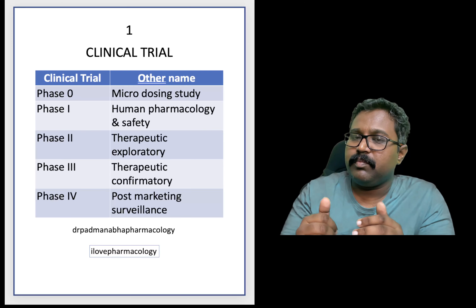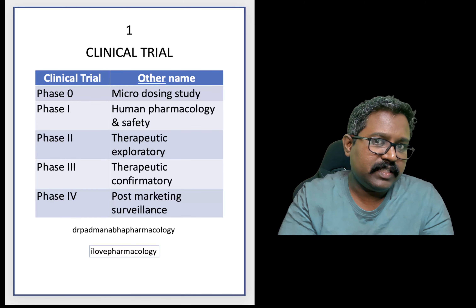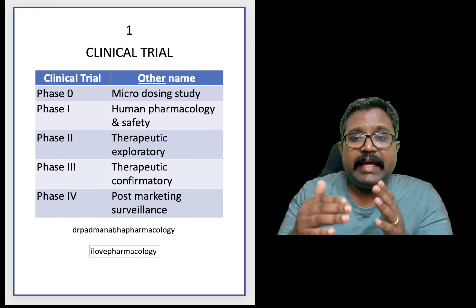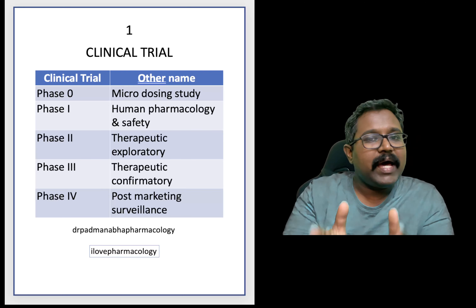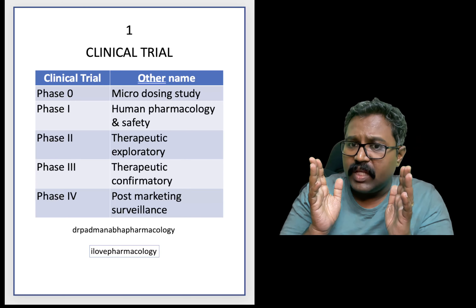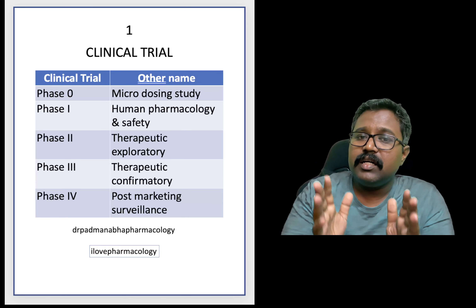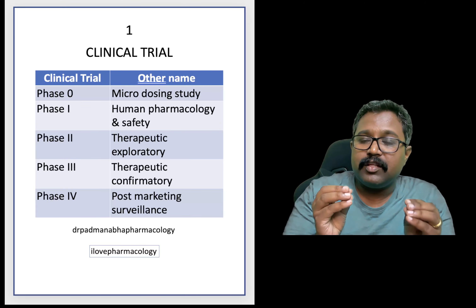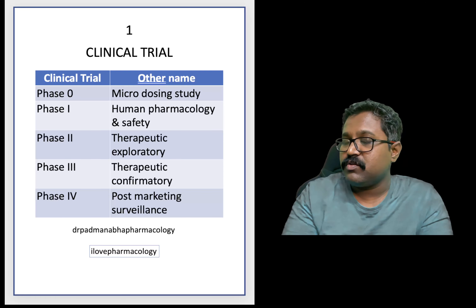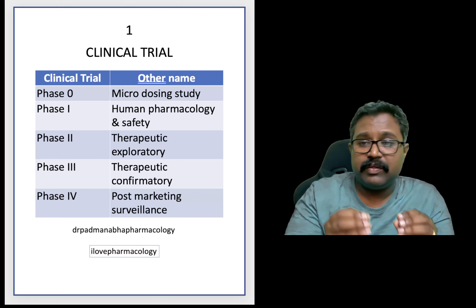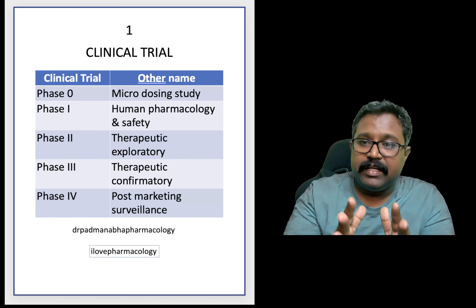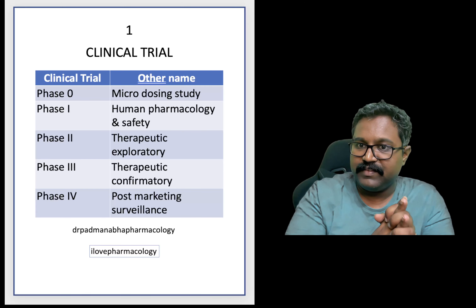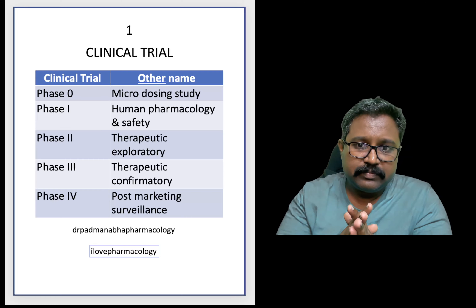If the pharmacokinetic parameters are in favor of the drug, this phase 0 micro-dosing study will be taken further into the phase 1 clinical trial, where you are going to test the new drug on humans — normal human volunteers. Phase 1 is called the human pharmacology and safety study. You are going to check for the ceiling dose and the dose at which there will be safety — the safety of the drug will be established.